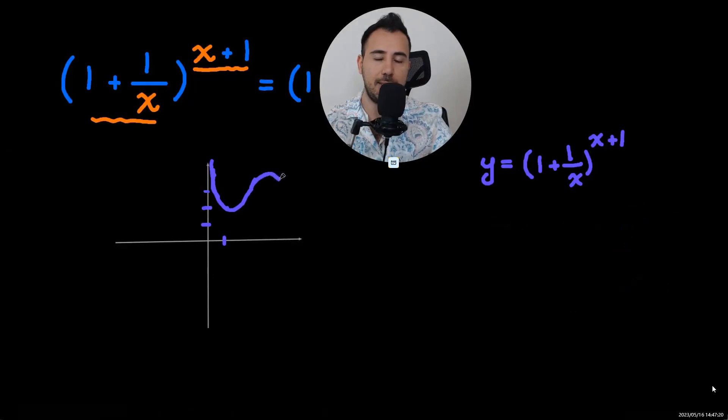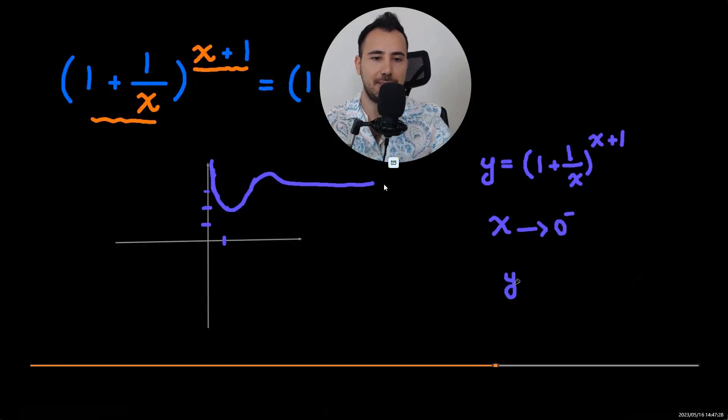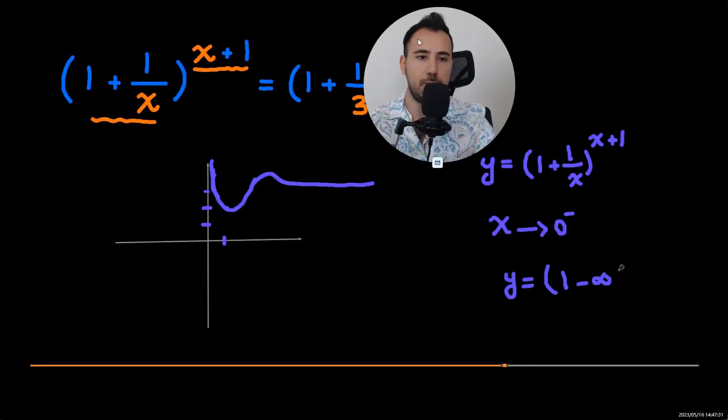And then the rest of the graph would look like this. It approaches a certain number, right? And now we're going to focus on the left side.